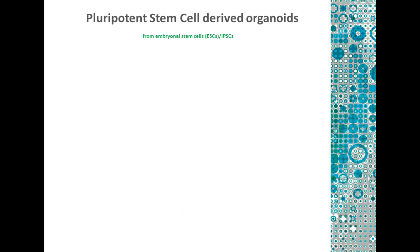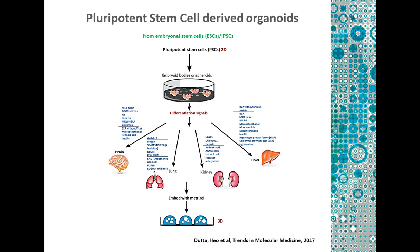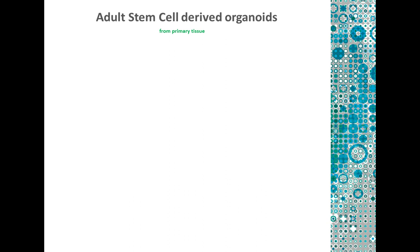How are pluripotent stem cell-derived organoids developed? This is a schematic showing how they are actually generated. The pluripotent stem cells are first grown in lab as embryoid bodies or spheroids, and these are pluripotent in nature. Basically, they are derived from master cells, because these can differentiate and form any kind of cell type. When grown as embryoid bodies or spheroids in tissue culture, depending on what kind of differentiation signals are provided to them, they can be differentiated into different kinds of tissue, and when they are embedded in a 3D hydrogel, these then form the specialized organoids.